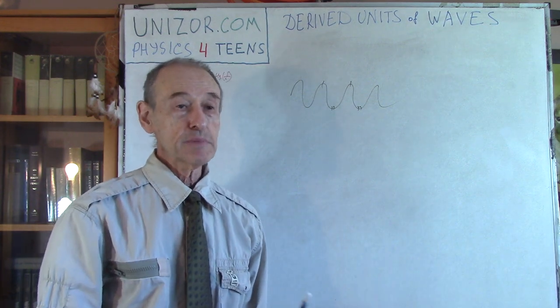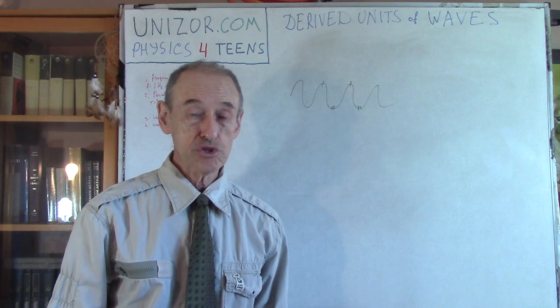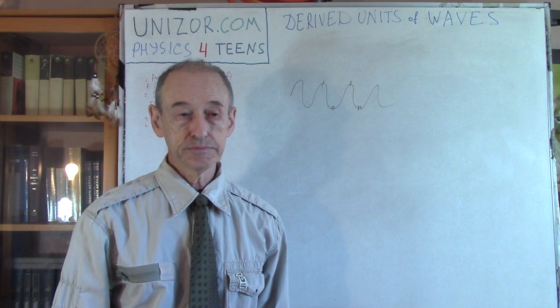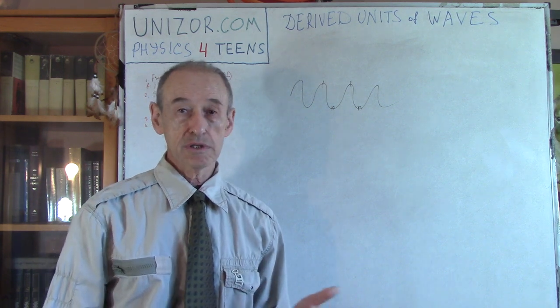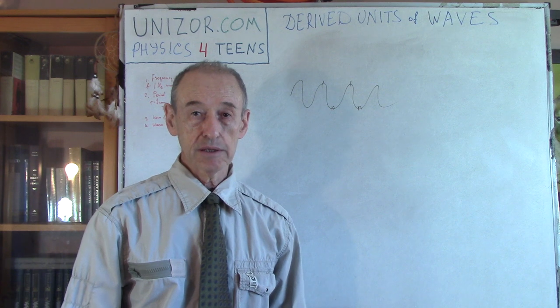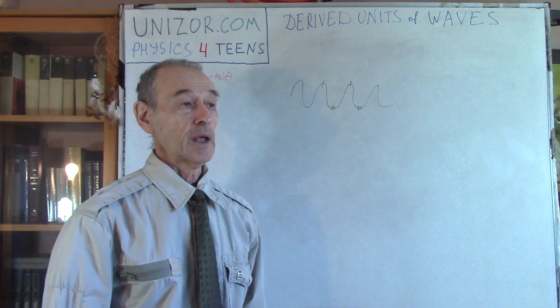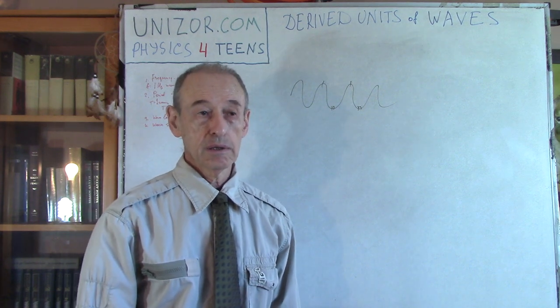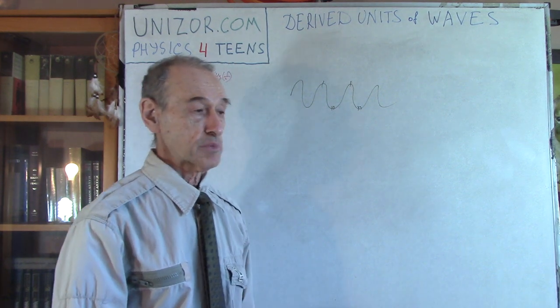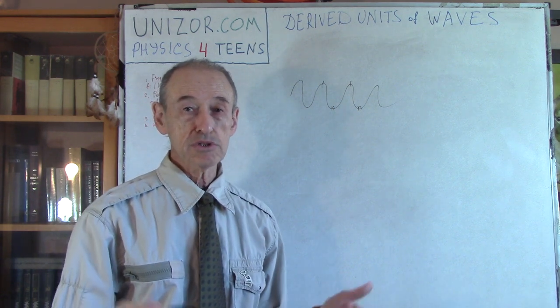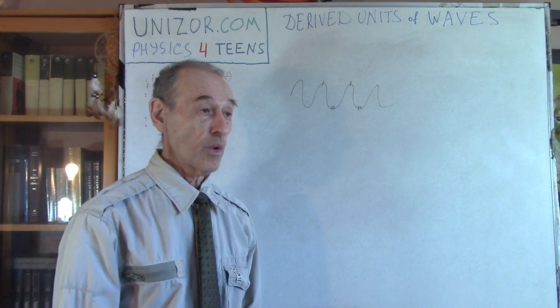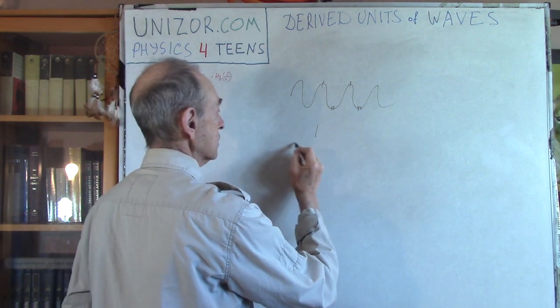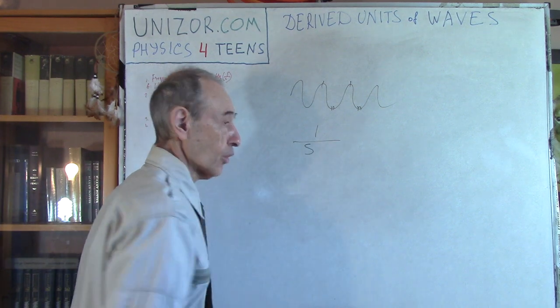So the frequency is how many oscillations this particular wave has per unit of time. Well, number of oscillation is just a number, which means it doesn't have any unit of measurement, and the time has the unit of measurement second. So how many oscillations per second? It can be one oscillation, 10 oscillations, 2500 oscillations, or it can be half of an oscillation.